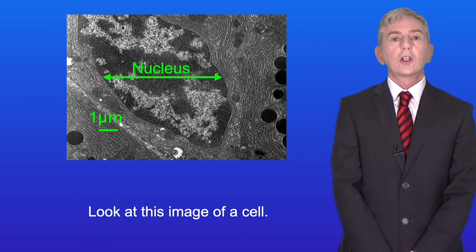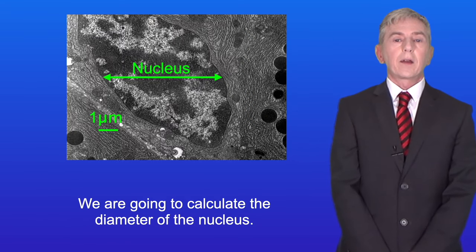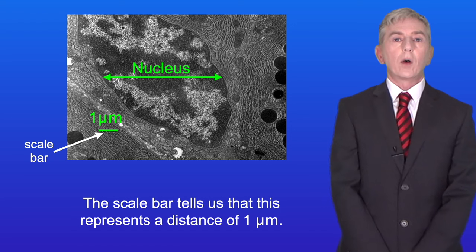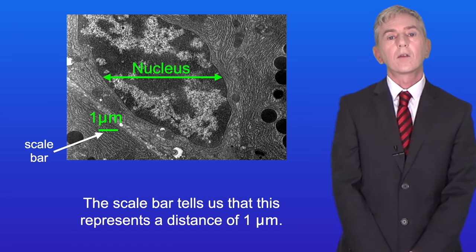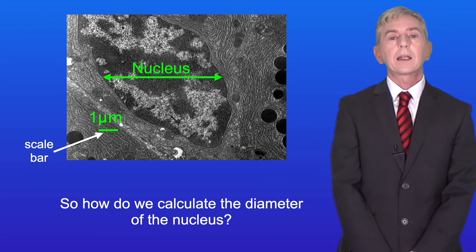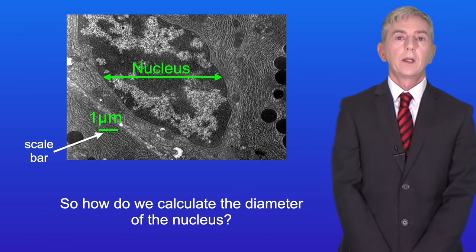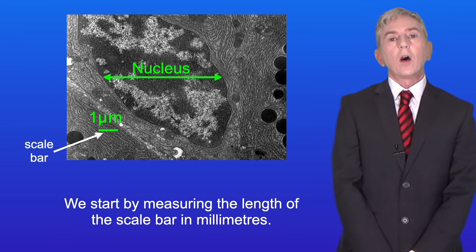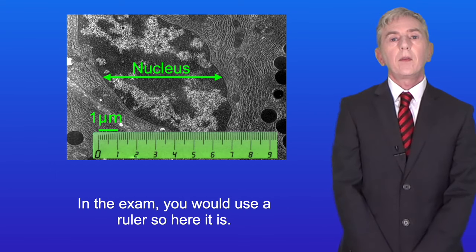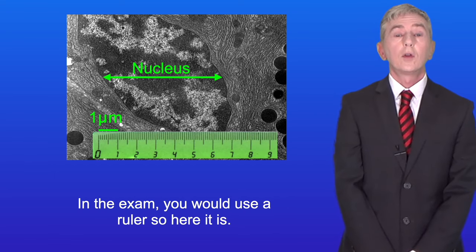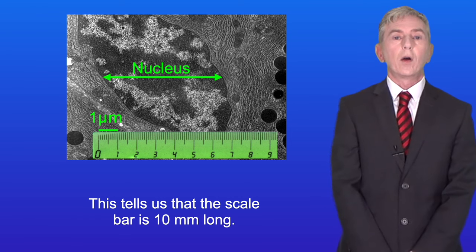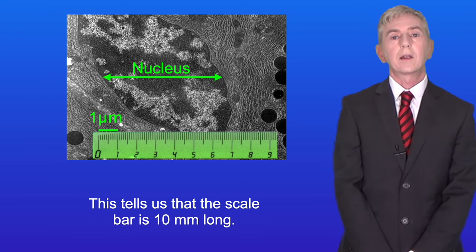Look at this image of a cell. We're going to calculate the diameter of the nucleus. The scale bar tells us that this represents a distance of one micrometer. We start by measuring the length of the scale bar in millimeters. In the exam you would use a ruler, and this tells us that the scale bar is 10 millimeters long.